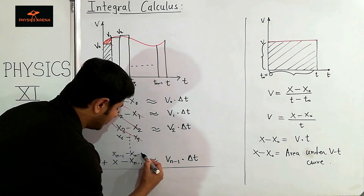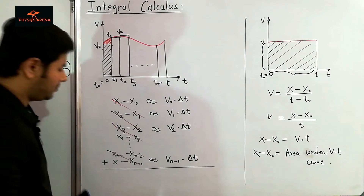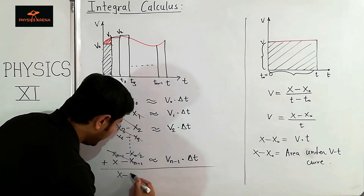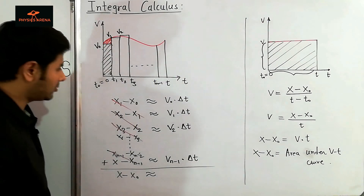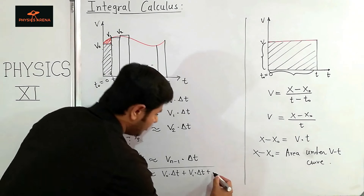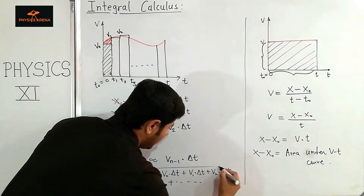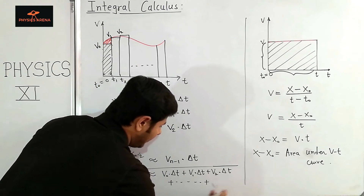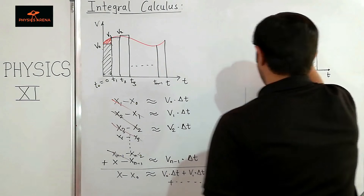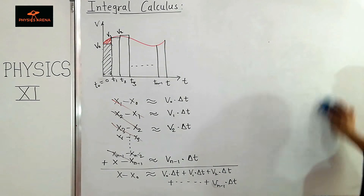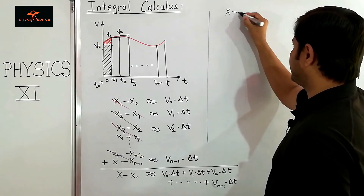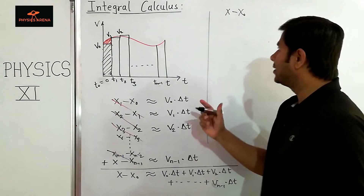Similarly, x₂ minus x₁ is nearly equal to v₁ times delta t, the area under that rectangle. Then x₃ minus x₂ is v₂ times delta t, and so on. The last equation is xₙ minus xₙ₋₁ is nearly equal to vₙ₋₁ times delta t. Now I will add them all and see what happens.